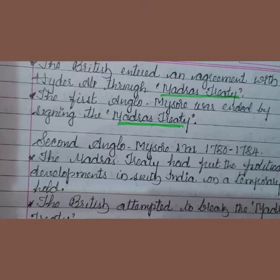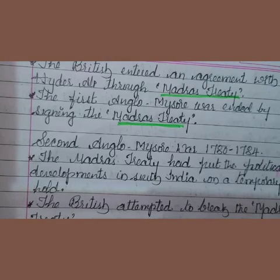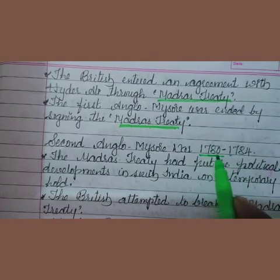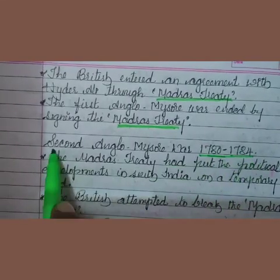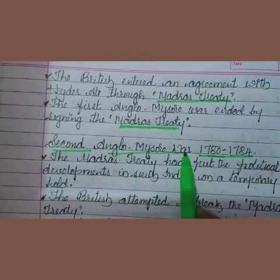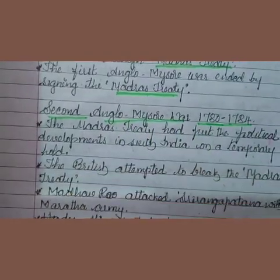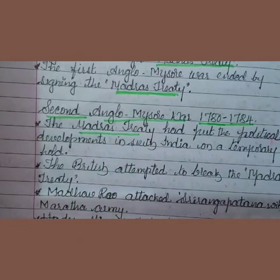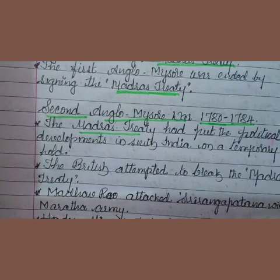After the first Anglo-Mysore war, there was a war between the English and Hyder Ali in the years 1780 to 1784. That is what we are calling the second Anglo-Mysore war. We know the Madras Treaty had put the political development in South India on a temporary hold.